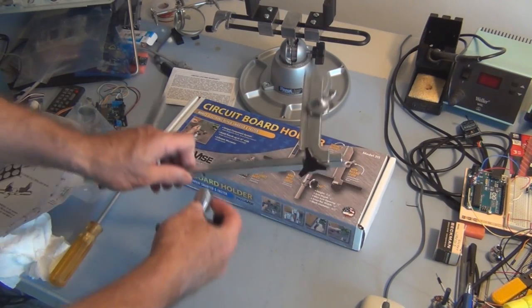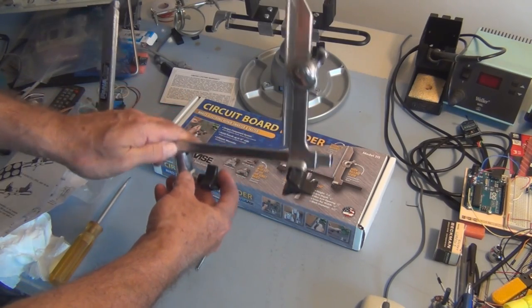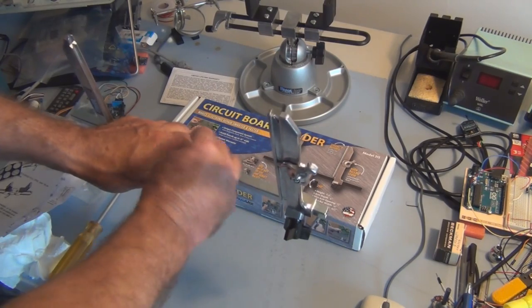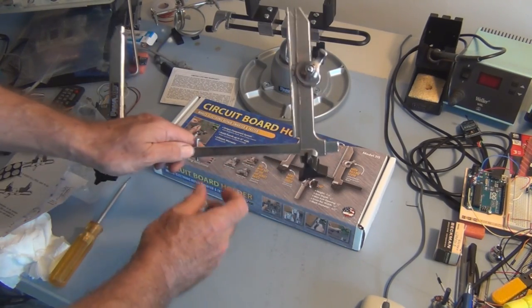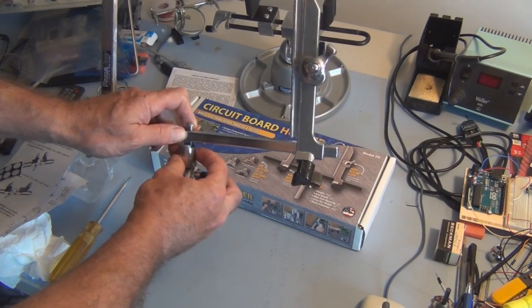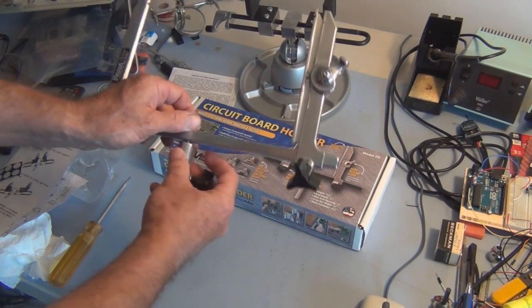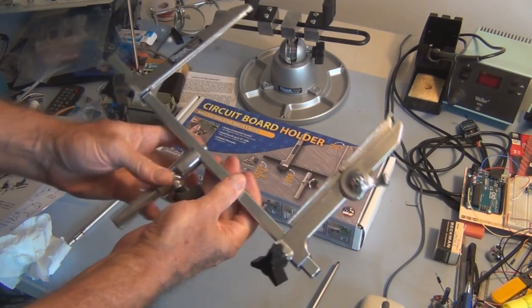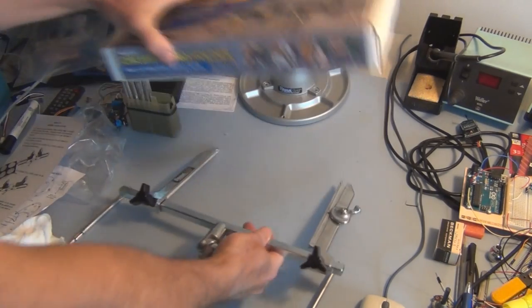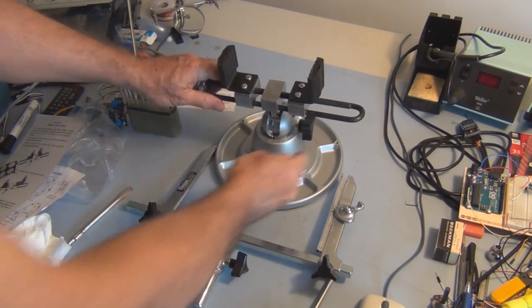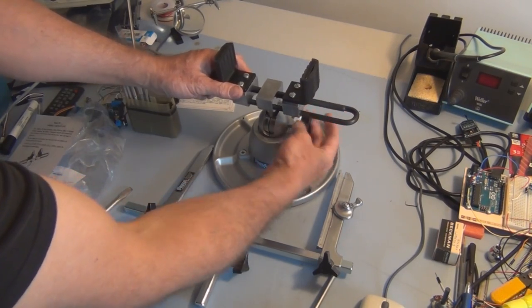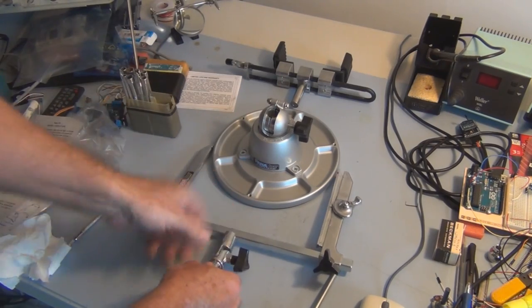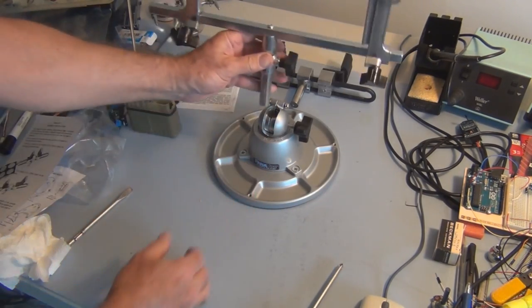And it attaches to this arm like so. So it's easy enough to change these different adapters by just loosening this knob here, take that off, and put this one on.